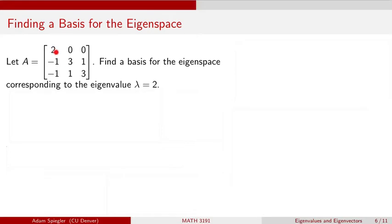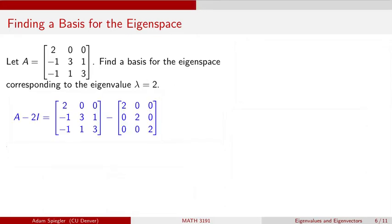The first column of matrix A is 2, -1, -1. The second column is 0, 3, 1. And the third column is 0, 1, 3. We want to find a basis for the eigenspace corresponding to the eigenvalue λ = 2. Recall that λ = 2 means we would set up the equation where we look at the matrix A minus 2I times some vector x equal to the zero vector. So let's first write out what this matrix A minus 2I would look like.